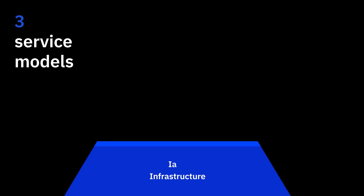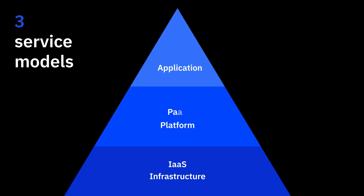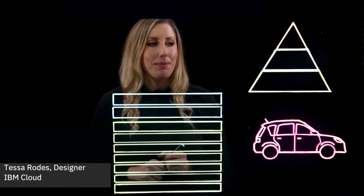In our introductory cloud video, we briefly talked about the three service models available on the cloud: infrastructure as a service, platform as a service, and software as a service. Before we dive into the details of each of these service models in the subsequent videos, let's get started with a quick overview of these models. Hi, I'm Tessa Rhodes and I'm a designer on IBM Cloud.